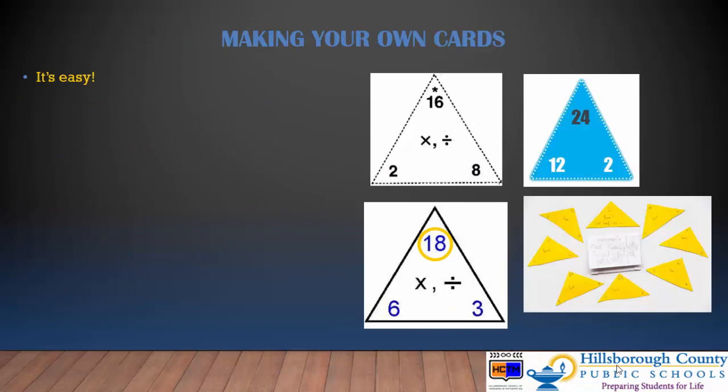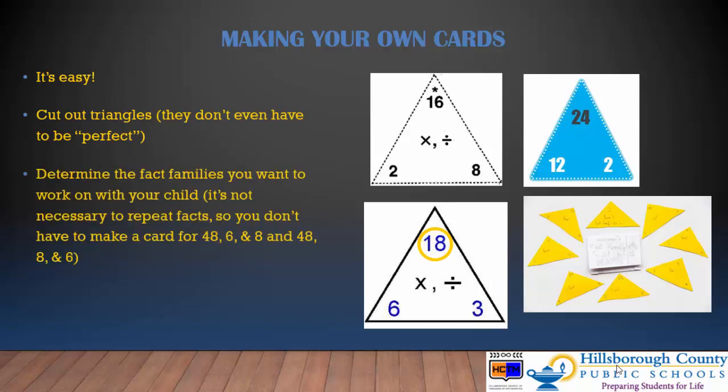It's easy to make your own triangle cards. Cut out triangles — they don't even have to be perfect. Determine the fact families you want to work on with your child. And remember, it's not necessary to repeat facts on new triangles. So once you make a card with 48, 6, and 8, you don't need another card that has 48 and 8 and 6 switched around. You can circle the product, put an asterisk, a dot, make it a different color — whatever you want to do.